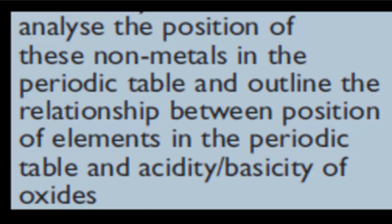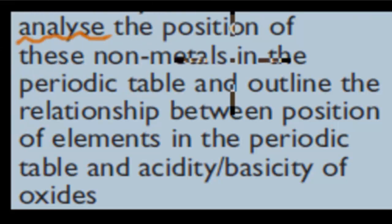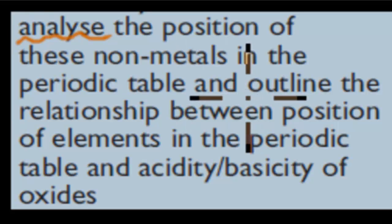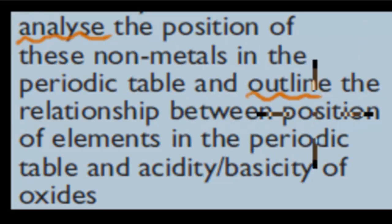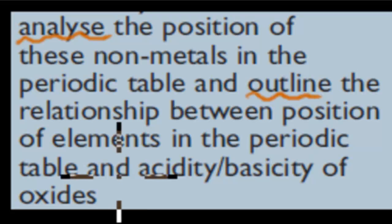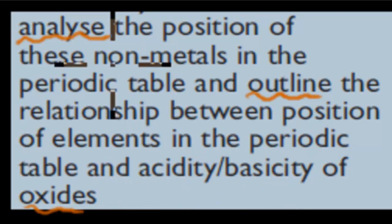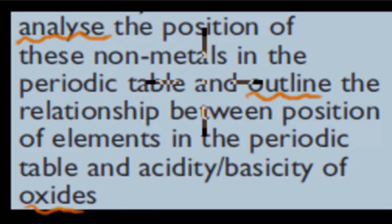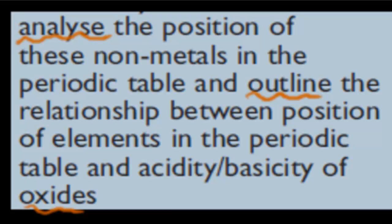Welcome back. In the last video, we talked about how non-metals produce acidic oxides and described the situations under which these act as acids. In this video, I'll cover our next point: analyze the position of non-metals in the periodic table and outline the relationship between the positions of elements in the periodic table and the acidity of oxides. So there are two parts — we have to analyze the position of non-metals and then outline the relationship between position and how they act as acids or bases.